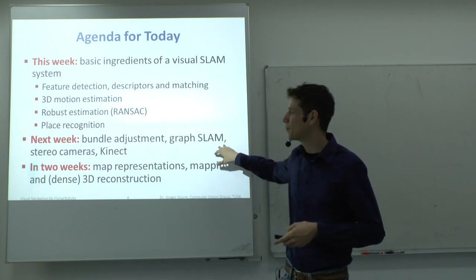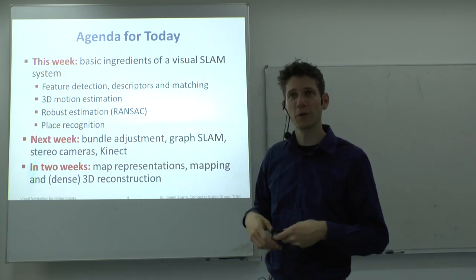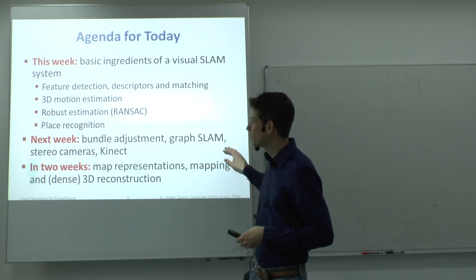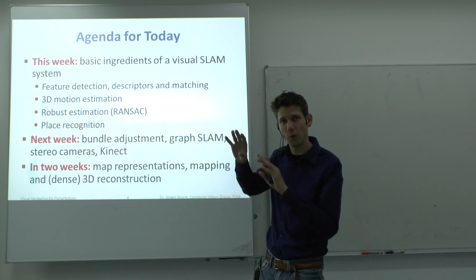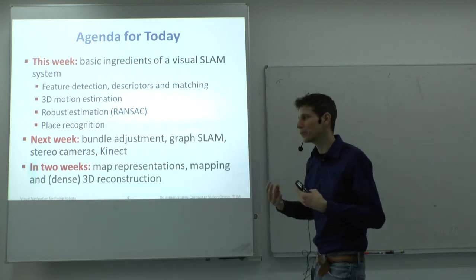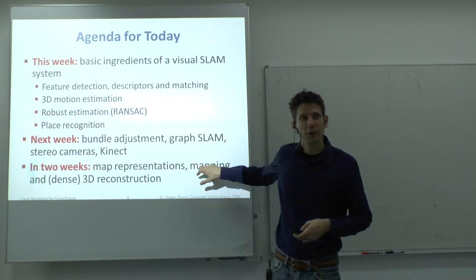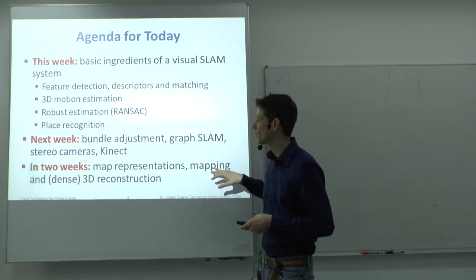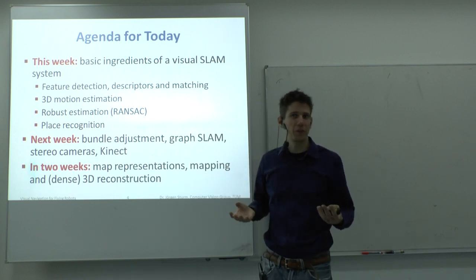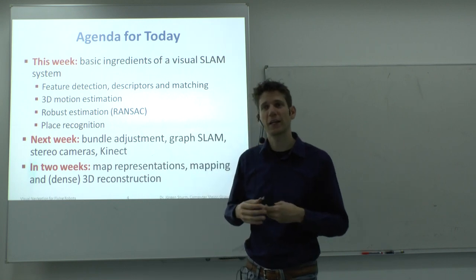There will be nice videos and a demo showing how you can take images with a normal camera, put them into a structure from motion program, and get a visualization of camera poses and 3D points. We'll first look at normal cameras, then stereo cameras which give depth images, and Kinect which is popular in robotics. In two weeks we look at the mapping side: different map representations, triangle meshes, and dense representations where a robot can reason about free and occupied space.